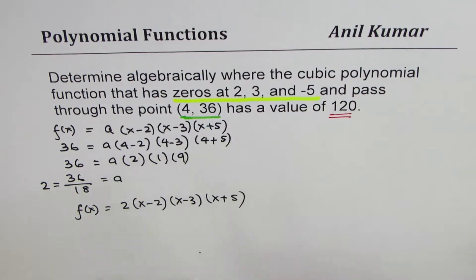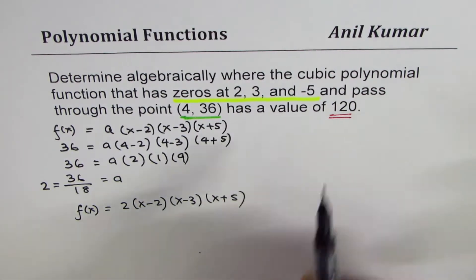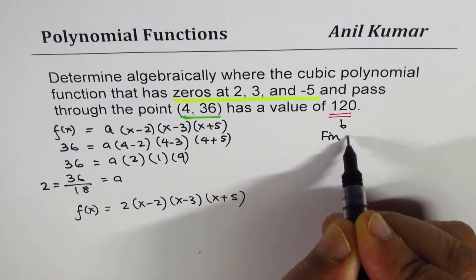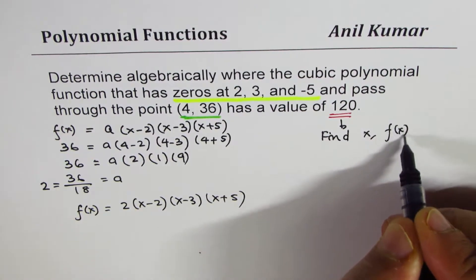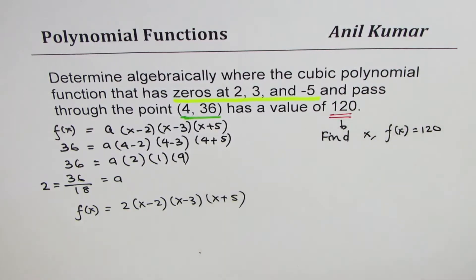So we have to find x for which f(x) is 120. That means we need to find x for which f(x) equals to 120.